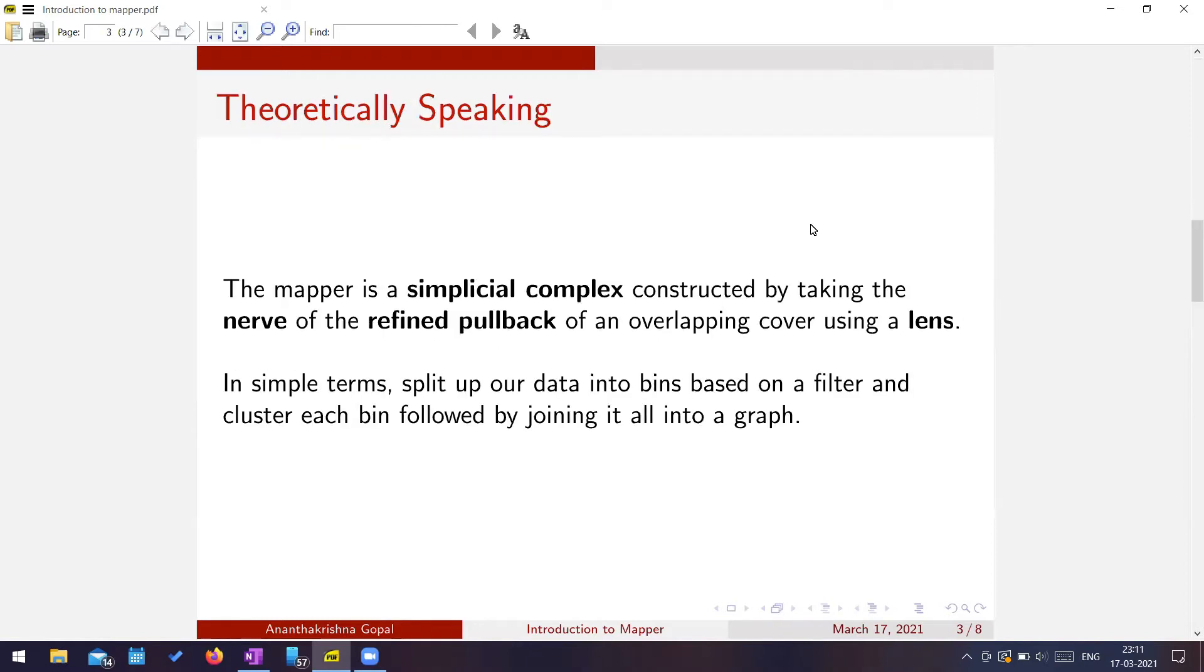So theoretically speaking, it gives you a simplicial complex by using the nerve of a cover, which you pull back using a lens. Well, a lot of complicated terms, but let's just simplify it. What happens is that we split up our data into bins based on a filter, and then we cluster our bins and then just make it into a nice graph. So first of all, I'll just go over some of the theoretical prerequisites and then we will see how things work.